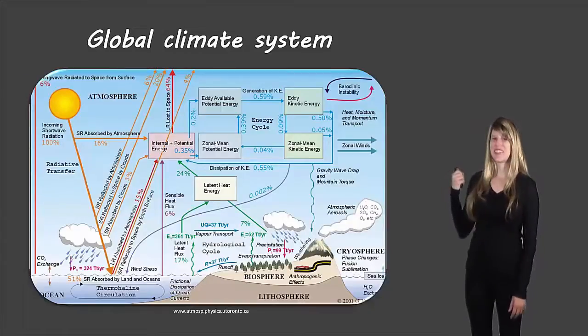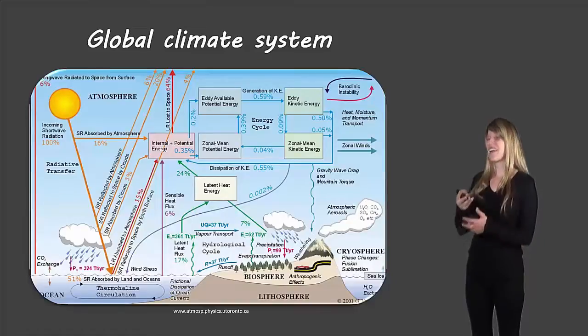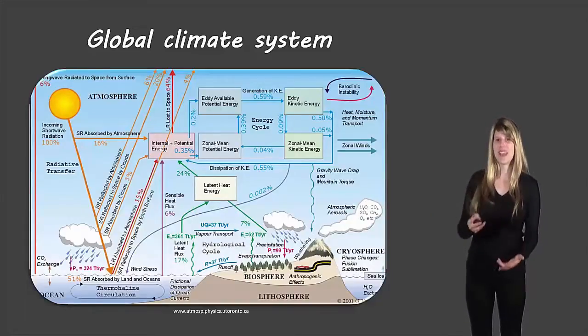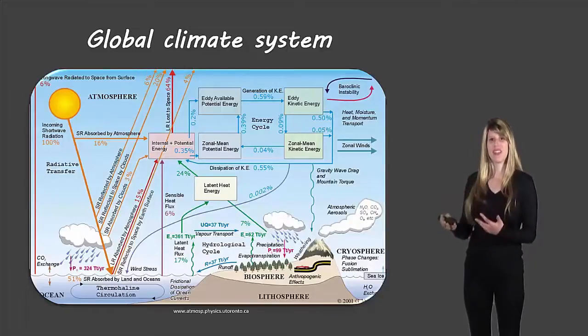Now as you can see from this picture here the global climate system is a pretty complex thing. We've got convection currents, thermohaline circulation, albedo, the absorption and reflection of sunlight. We've got all sorts of things happening there.